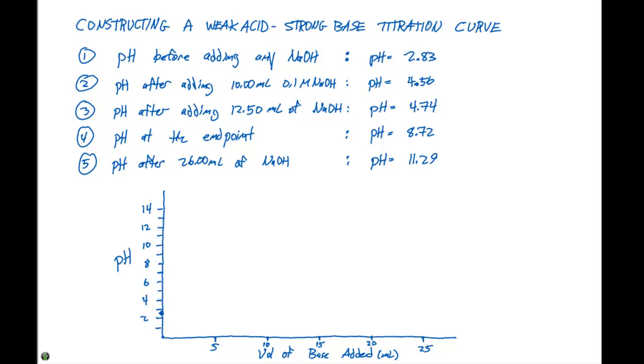The pH before adding any base is going to be 2.83, which is indicated by this point down here on the graph. When we add 10 milliliters of our 0.1 molar sodium hydroxide solution, our pH is 4.56, so it's going to be right around here.